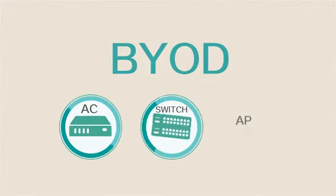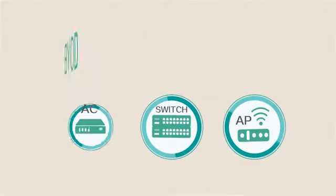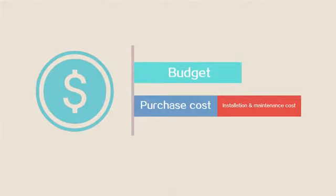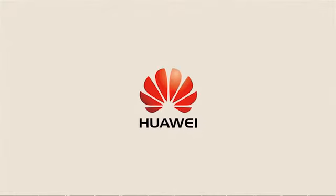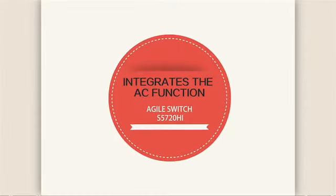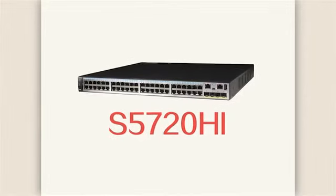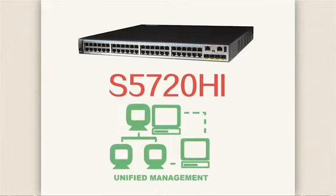A BYOD network consists of three parts – AC, Switch, and AP. To reduce customers' investment on products, installation, and maintenance, Huawei developed the Fixed Configuration Agile Switch that integrates the AC function to implement unified management of wired and wireless users.